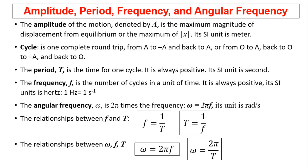The relationship between f and T is f equals 1 over T. They are inversely related. The relationships between omega, f, and T are omega equals 2πf, and because f equals 1 over T, omega also equals 2π over T.